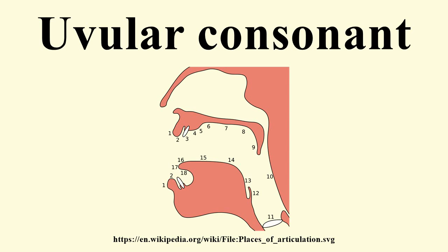Two uvular R's are found in northwestern Europe. It was once thought that they spread from northern French, but some linguists believe that contact does not explain the appearance of all uvular R's in Europe. The voiceless uvular stop is transcribed as Q in both the IPA and SAMPA.